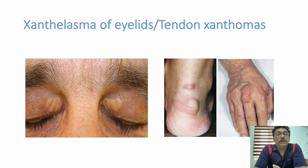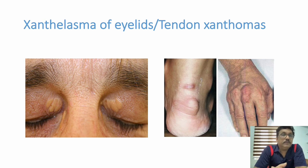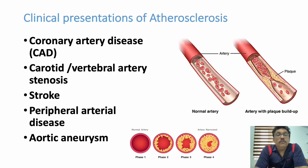Two important clinical findings in dyslipidemia are xanthelasma — yellow patches seen on the eyelids — and tendon xanthomas, which can also be seen. Another very important finding is arcus in the eyes, which is a significant sign seen in dyslipidemia.